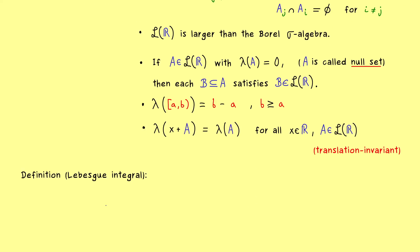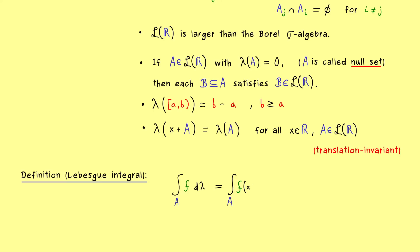Now we have a well-defined measure with additional properties, and as always for a measure, we can define an integral. In general, this integral is called the Lebesgue integral with respect to the given measure. We will use the general Lebesgue integral with respect to the Lebesgue measure, with different notations that all mean the same thing. The standard notation is the integral of f over A written with lambda to denote the Lebesgue measure, where A is a Lebesgue measurable subset of R. Equivalently, we write f(x) d(lambda)(x), and since we always deal with the Lebesgue measure, we can shorten this by omitting lambda and just writing dx.